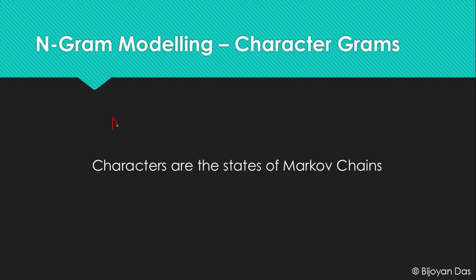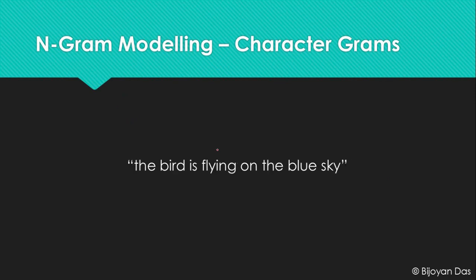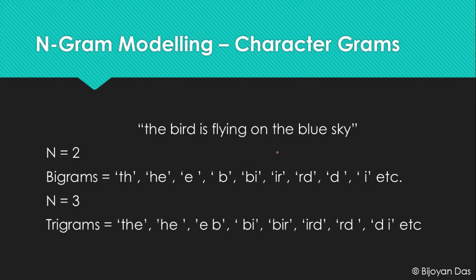Let's look at what character n-grams really mean. We have the sentence: 'The bird is flying on the blue sky.' We want to find all the different n-grams from it. For N equals two, we get the different bigrams. The first bigram is 'th', the second is 'he', the third is 'e ' (e and space), then ' b' (space and b), then 'bi', then 'ir', then 'rd', and so on — we get all the bigrams.